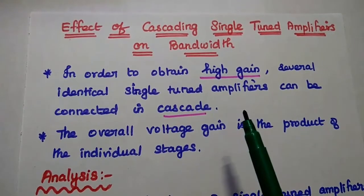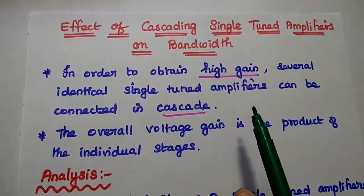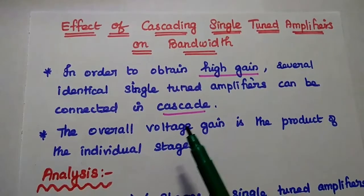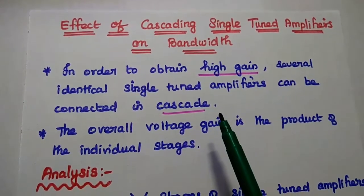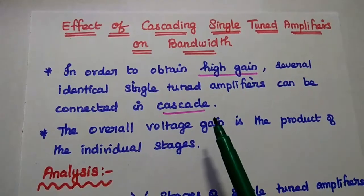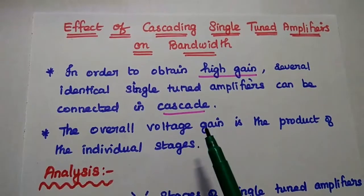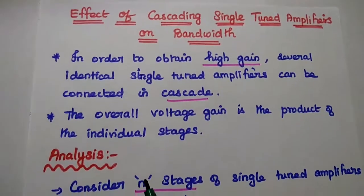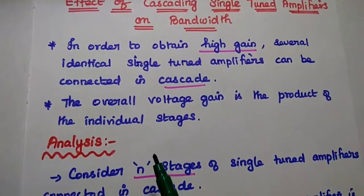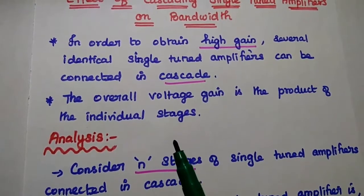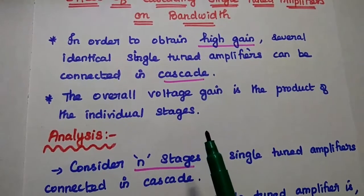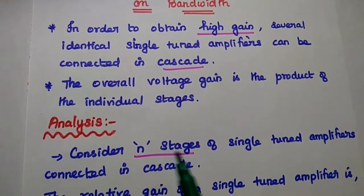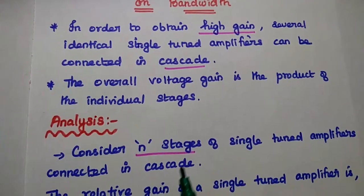If you want to increase the gain, we can connect several identical single-tuned amplifiers in a cascaded manner. Cascade means series connection. Here the overall voltage gain is the product of the individual stages, thereby increasing the gain.